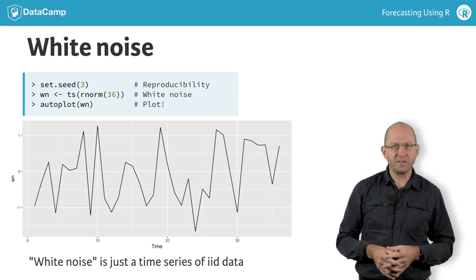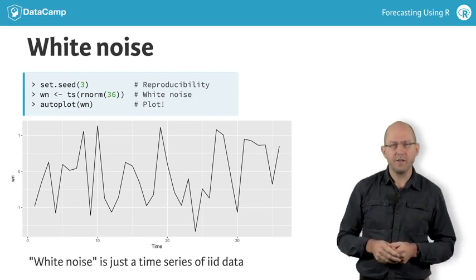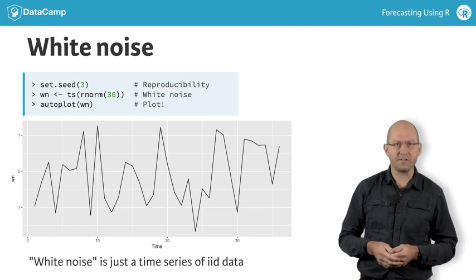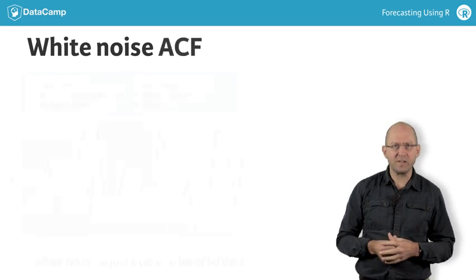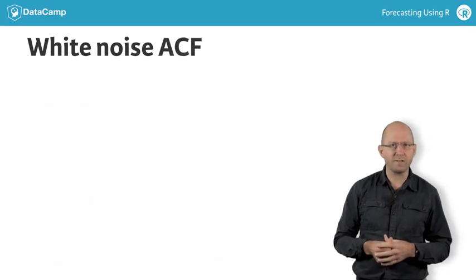In time series it is called white noise. The name comes from physics, where white light has some similar mathematical characteristics. Although it appears boring, it is a very important type of time series because it is the basis of almost all forecasting models.